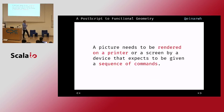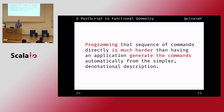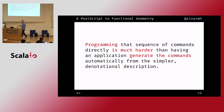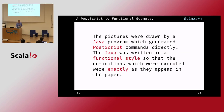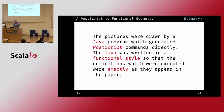Towards the end of the paper, a picture needs to be rendered on a printer or screen by a device that expects some sequence of commands. Programming the sequence directly is much harder than having an application generate these commands automatically. The pictures in Henderson's paper were drawn by a Java program which generated PostScript commands directly, written in a functional style so that definitions were executed exactly as they appear in the paper.